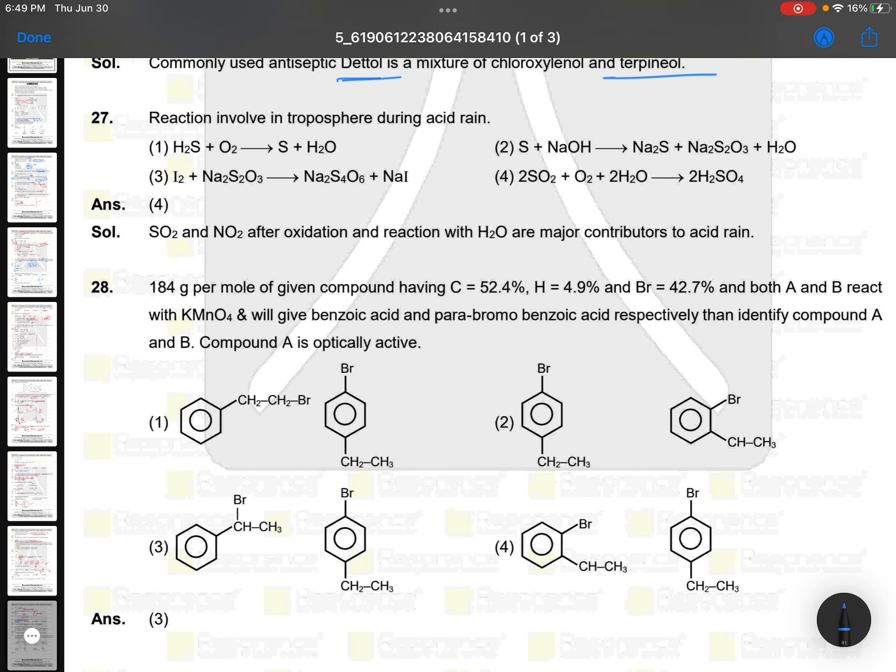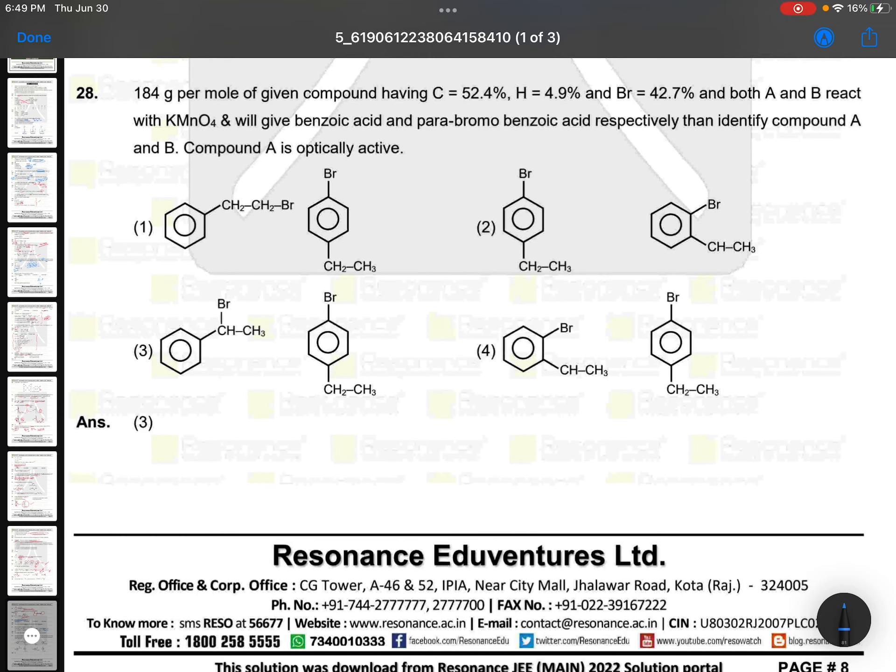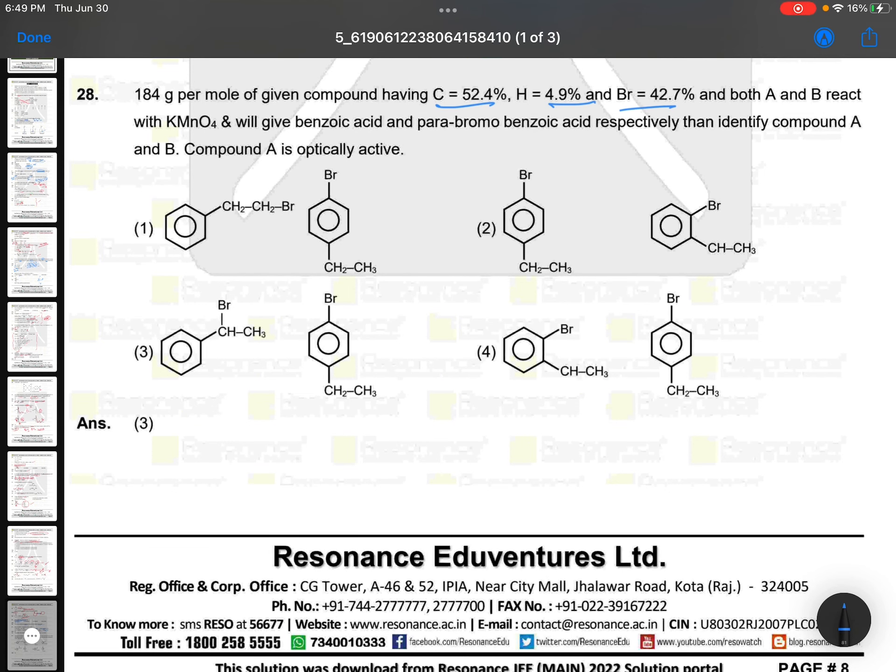184 grams per mole given compound. Both A and B react with KMnO4 to give benzoic acid and para-bromo benzoic acid. So in second case, bromine must be at para place. So this is actually okay, not bad. And this will become para-bromo benzoic acid only here. This won't become para-bromo because this is ortho position. This can also become, this can also become. So second, this is gone.